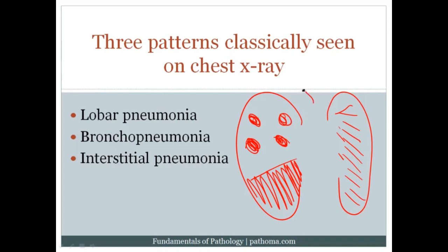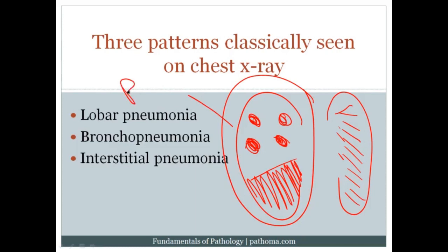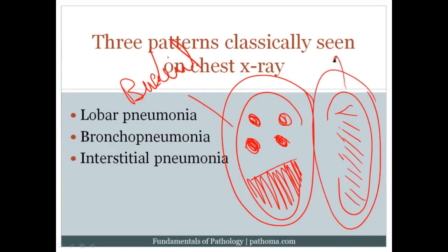Lobar pneumonia and bronchopneumonia are usually bacterial. Interstitial pneumonia is also called atypical pneumonia, and the organisms are not usually bacterial — you think about viruses and other atypical organisms.